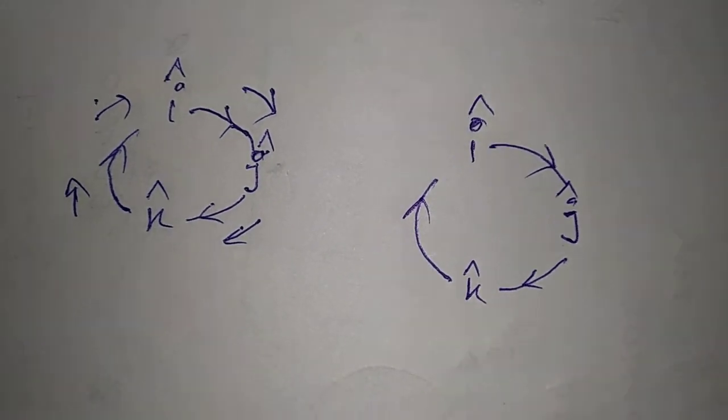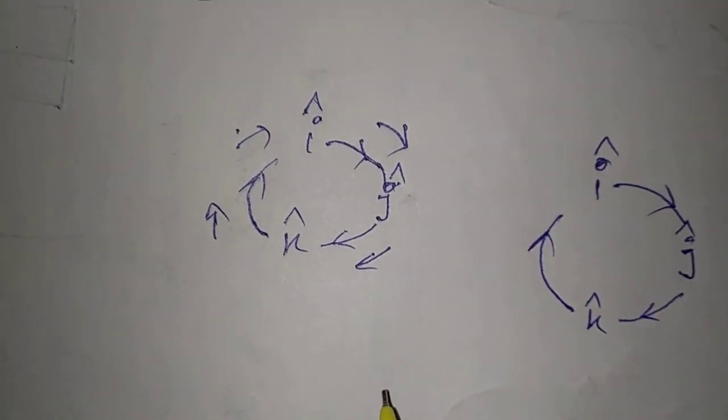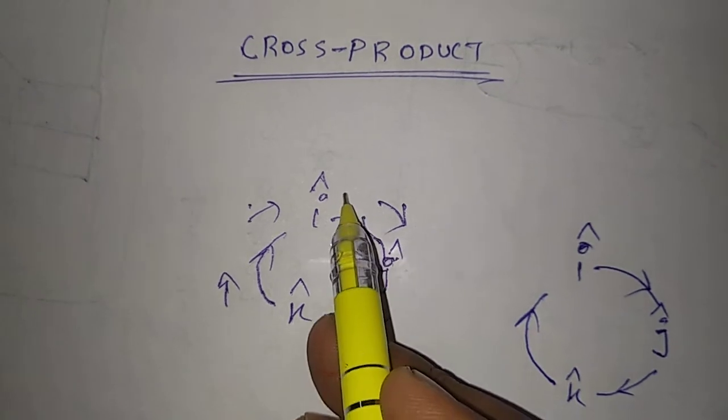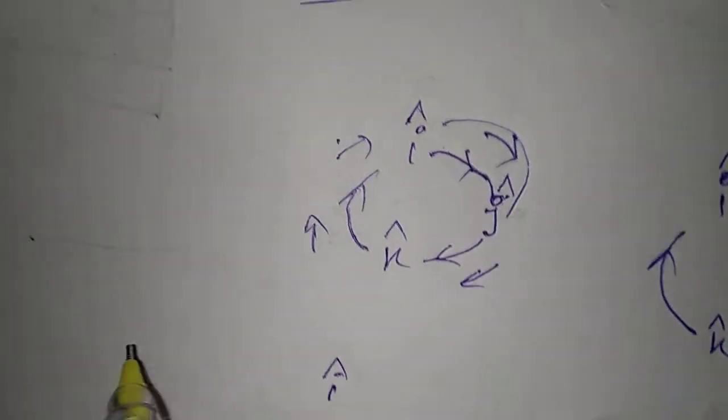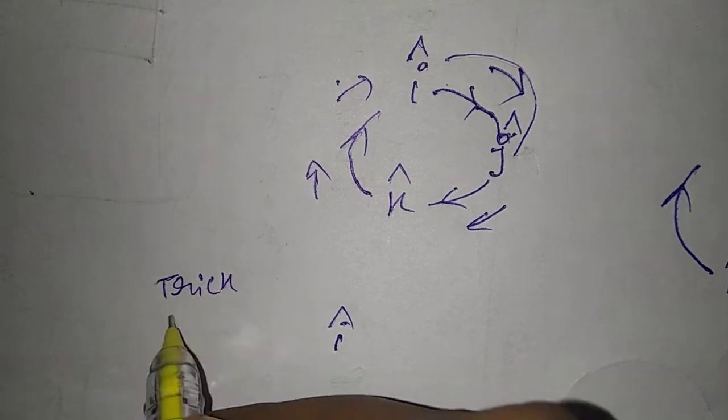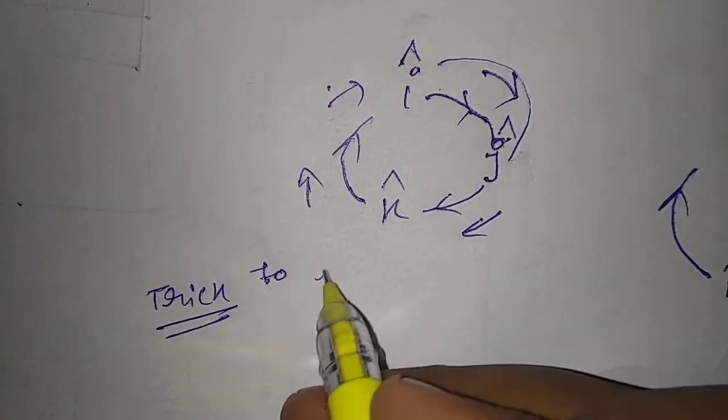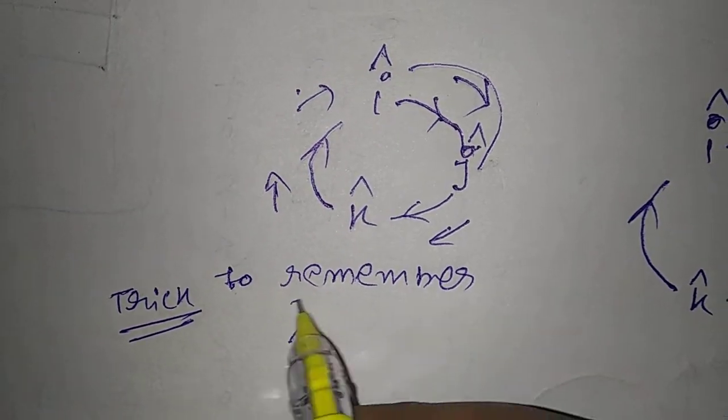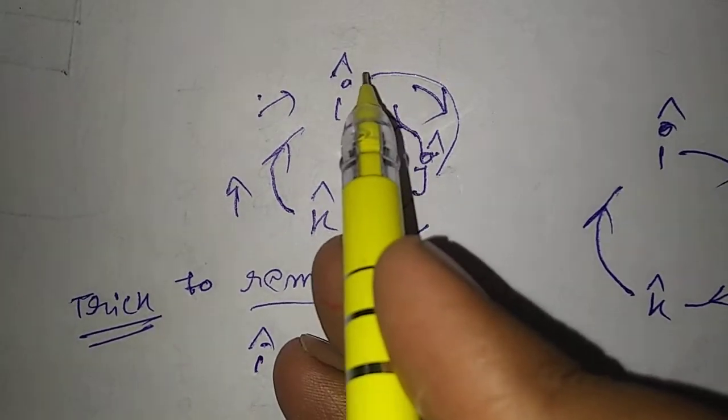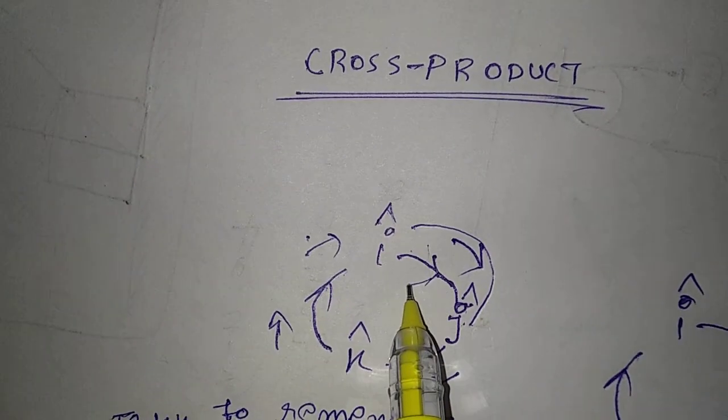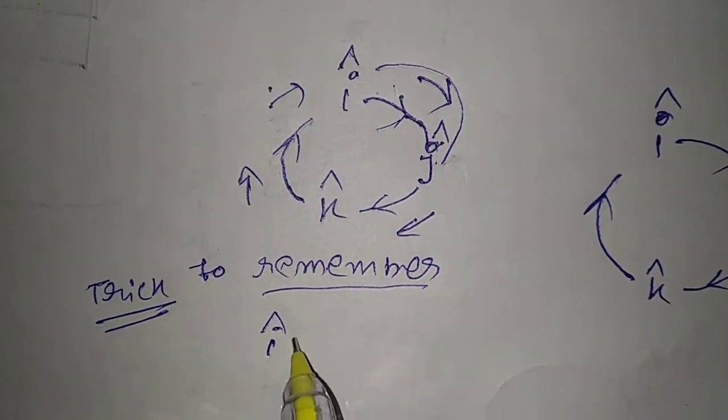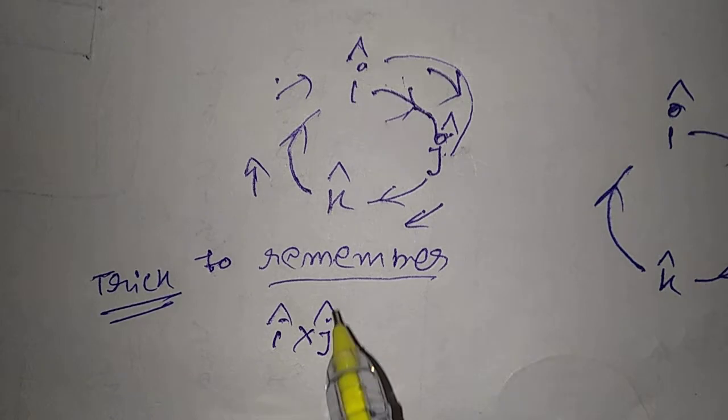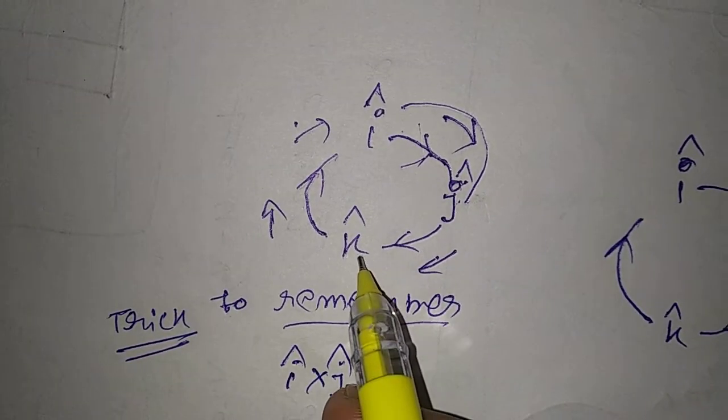Now, a trick from here: when I goes to J, that means this trick is to remember when I goes to J in this direction - clockwise direction - then I cross J. Then J goes to what?